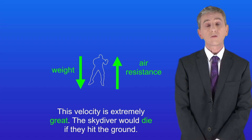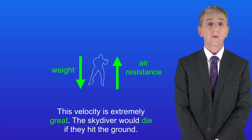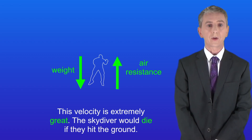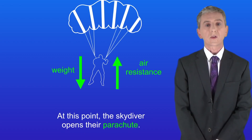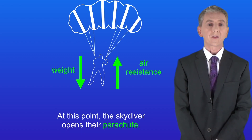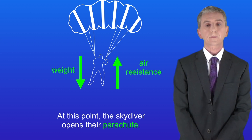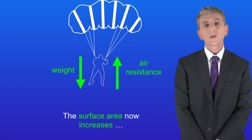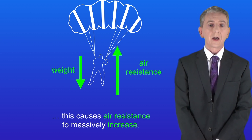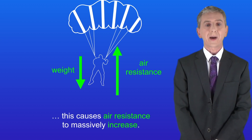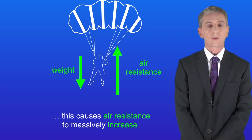This velocity is extremely great and the skydiver would die if they hit the ground. So at this point the skydiver opens their parachute. The surface area now increases and this causes air resistance to massively increase.